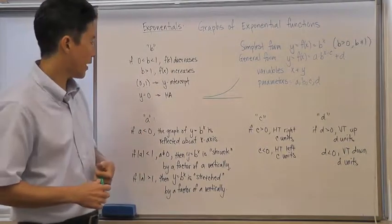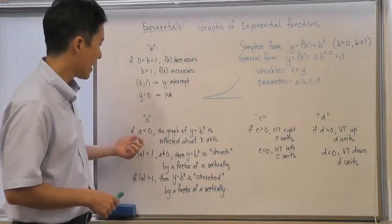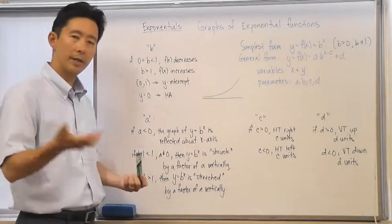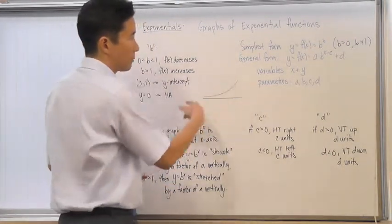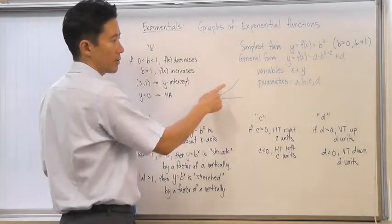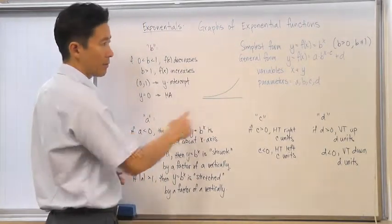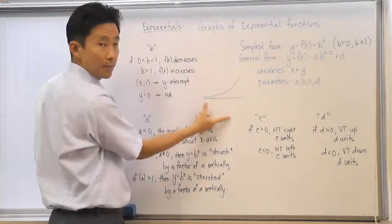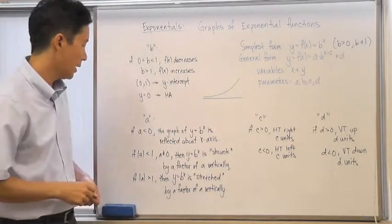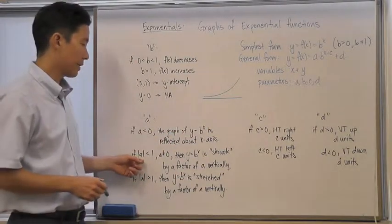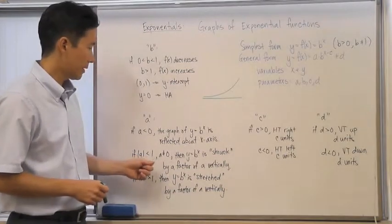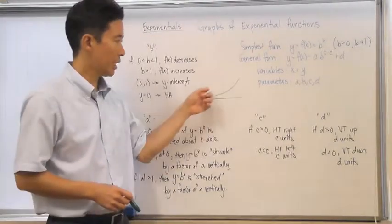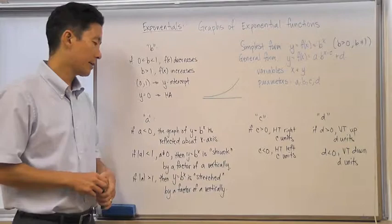Let's take a look at the value of a. If a is less than 0, then the graph of y equals b to the x is going to be reflected above the x-axis. So if this is what y equals b to the x looks like, and you have a negative in front of it — just a negative 1 — then that reflects the graph. If the absolute value of a is less than 1, and a is not equal to 0, then the function is going to be shrunk by a factor of a vertically.